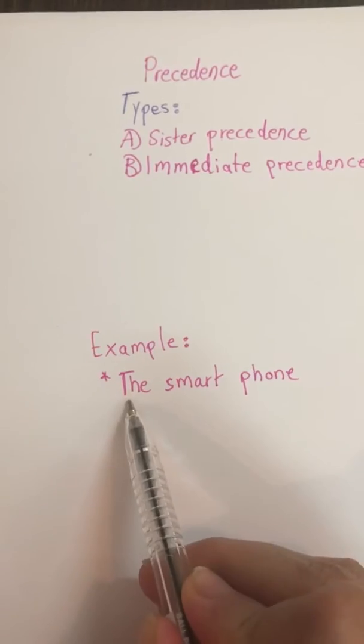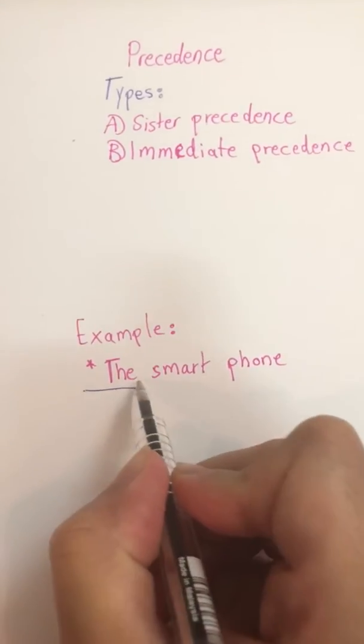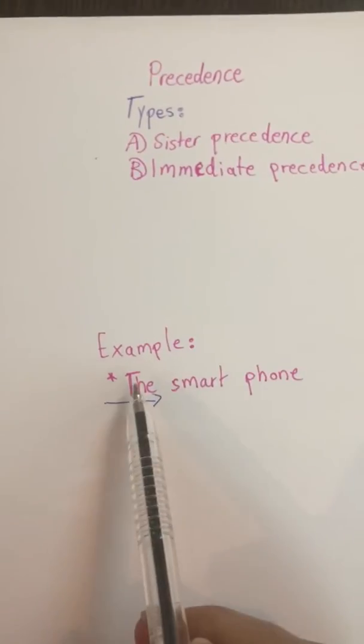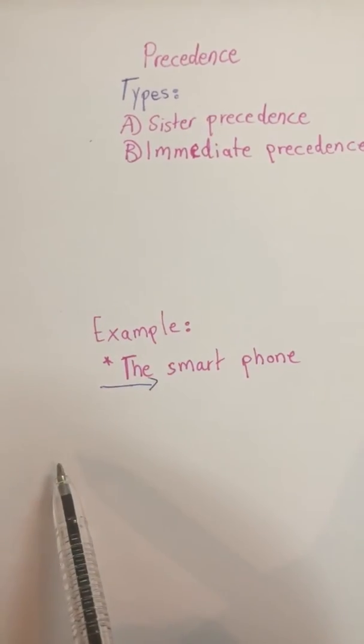Precedence means when something comes before something else. Now the English sentence starts from the left to the right. So 'the' precedes 'smart.'